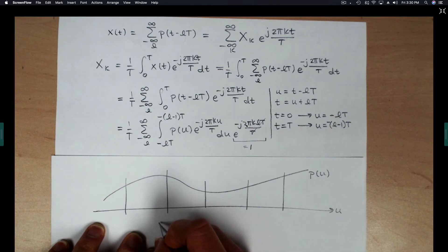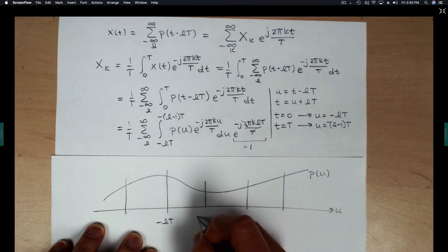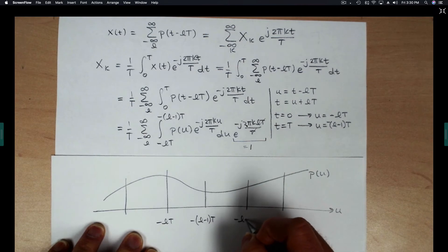Let's suppose this is minus LT, minus L minus 1T, minus L minus 2T, and so on.